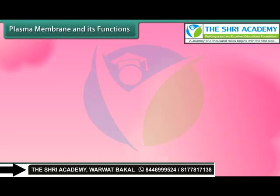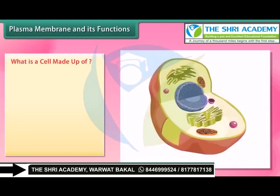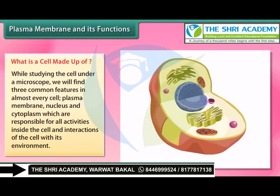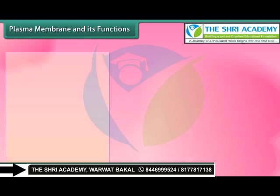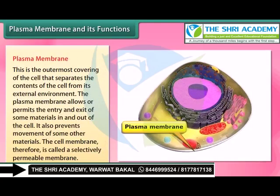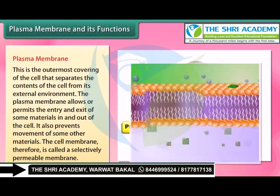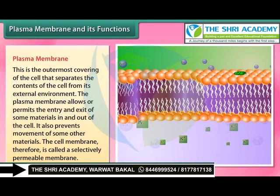Studying the cell under a microscope reveals three common features in almost every cell: plasma membrane, nucleus, and cytoplasm. These are responsible for all activities inside the cell and interactions with its environment. The plasma membrane is the outermost covering of the cell that separates the contents of the cell from its external environment. It allows or permits the entry or exit of some materials in and out of the cell, and prevents movement of some other materials. Therefore, the cell membrane is called a selectively permeable membrane.